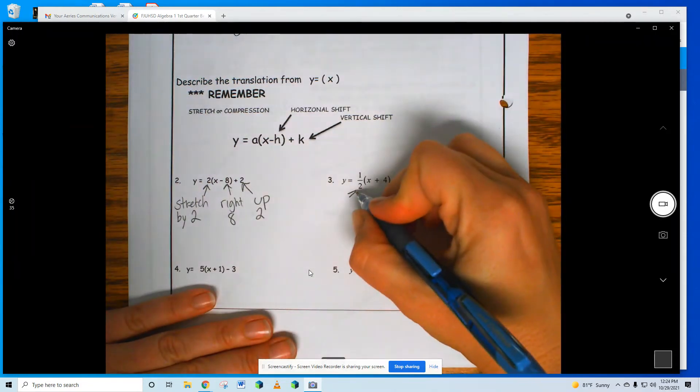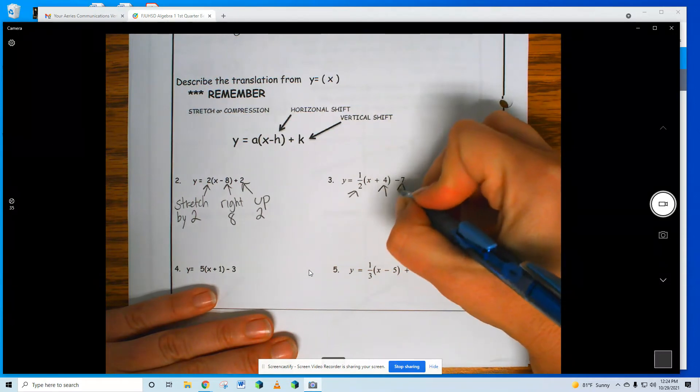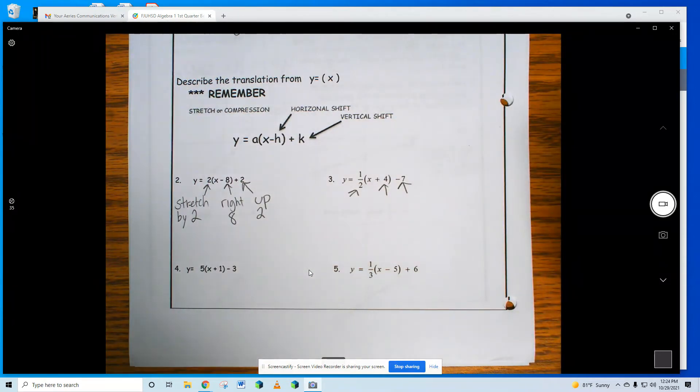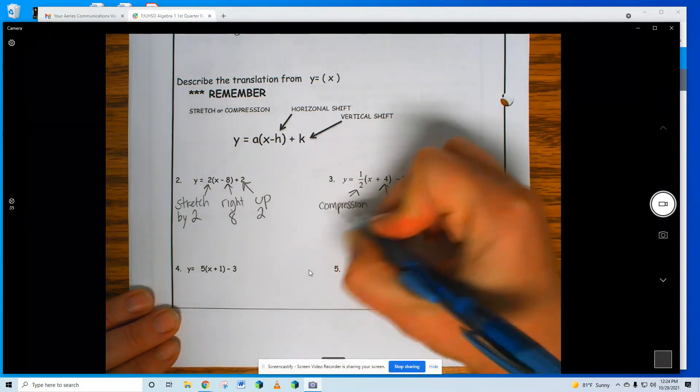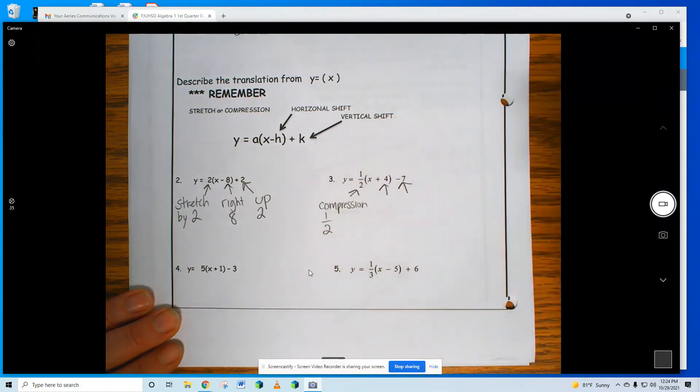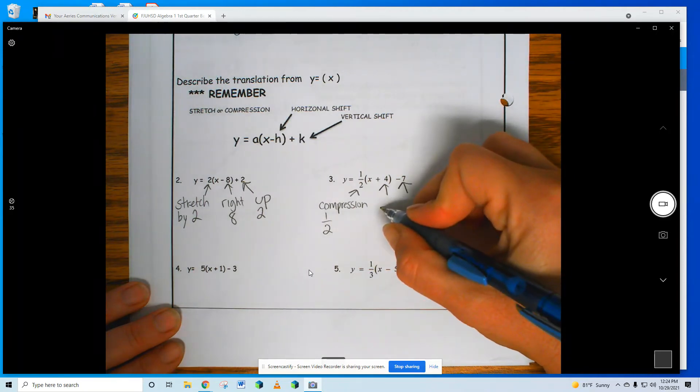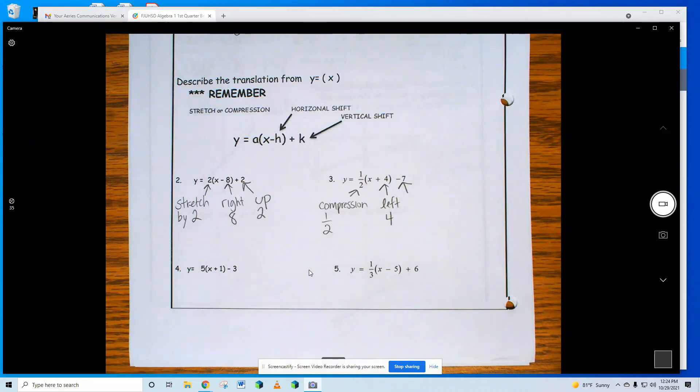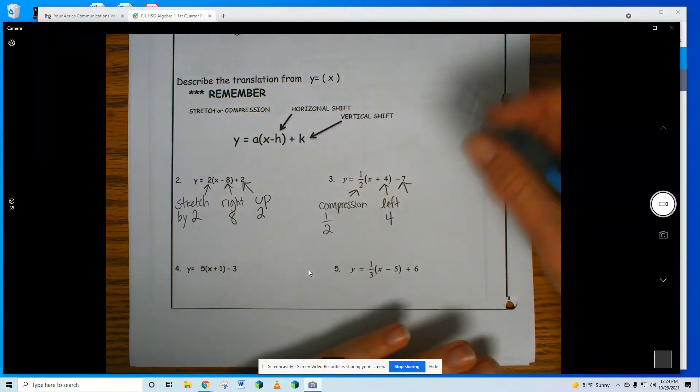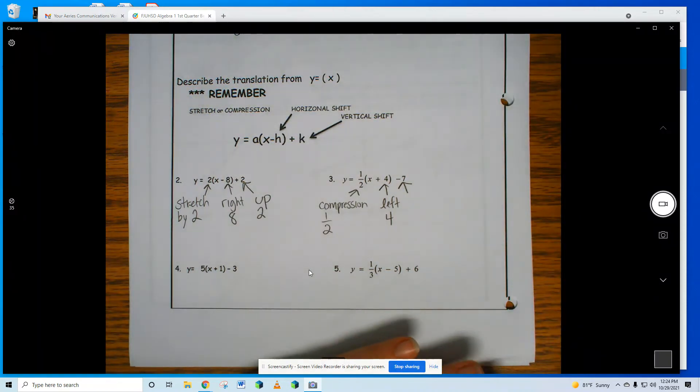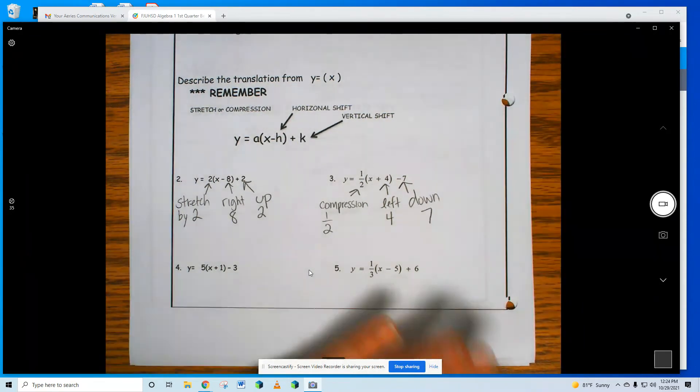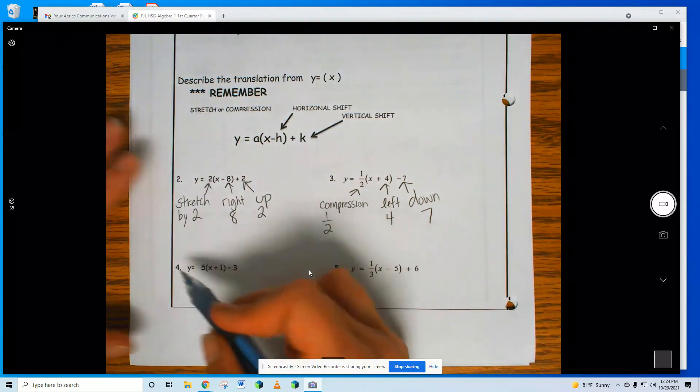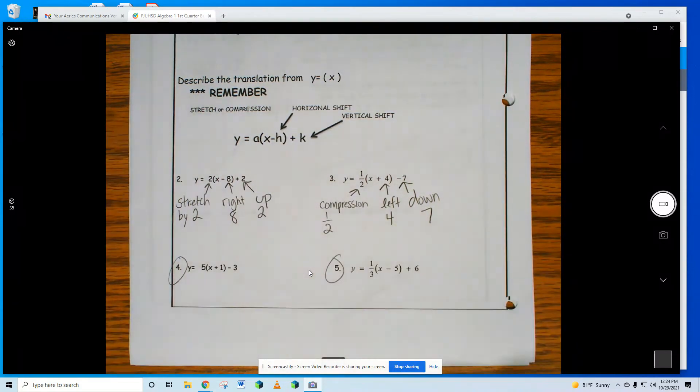Number 3: a 1/2 and a 4 and a 7. Compression, compression of 1/2. You're right, it was left 4. And then someone knew. Yes, ma'am. Yes, down 7. And you can do 4 and 5 by yourself. Turn the page, Margaret.